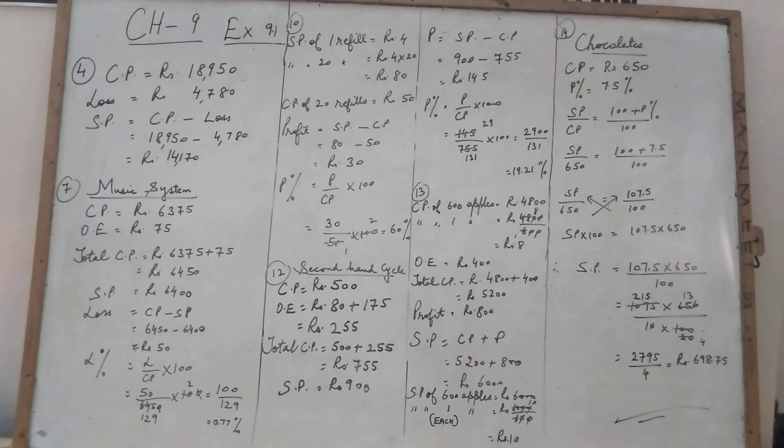So selling price of 600 apples is Rs. 6,000. But see the question. Children, they have written, find the selling price of each apple. Each means one apple. So divide Rs. 6,000 with 600, we got Rs. 10. So Rs. 10 is the selling price of each apple. Now coming to the last question. Parth bought a box of chocolate for Rs. 650. So bought means purchase. So Rs. 650 will be the cost price.